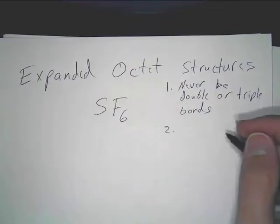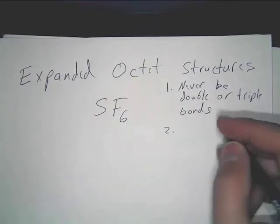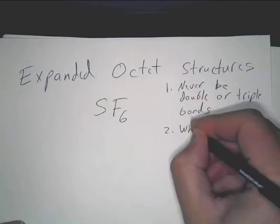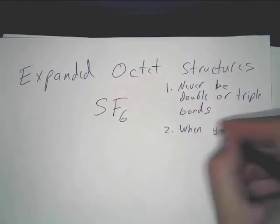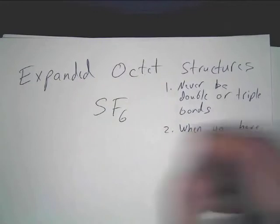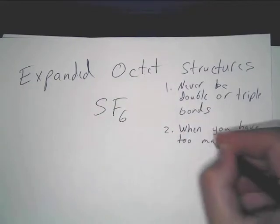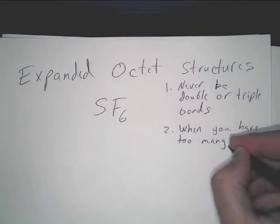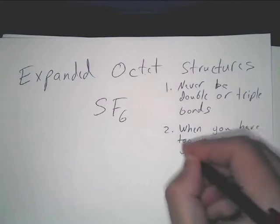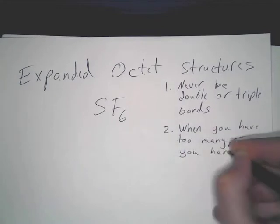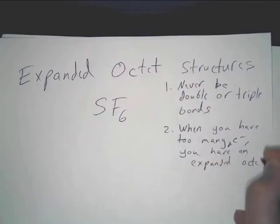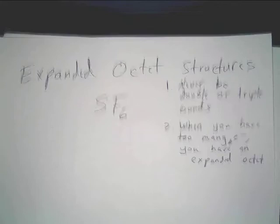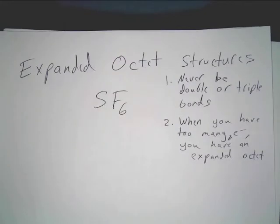And two, you will recognize these as being expanded octet structures when you have too many electrons to go around normally. So when you have too many electrons, you have an expanded octet. I'm going quickly because the class is almost over.